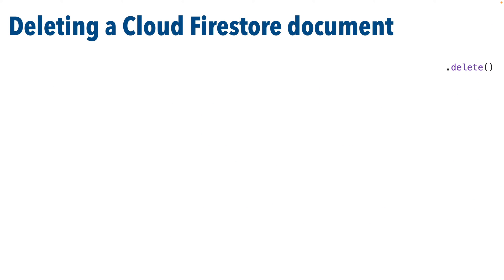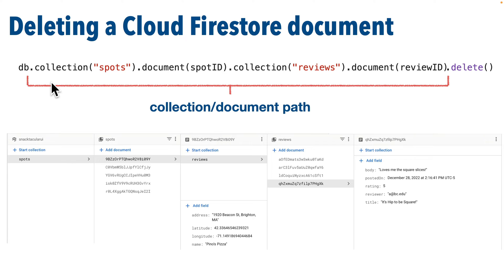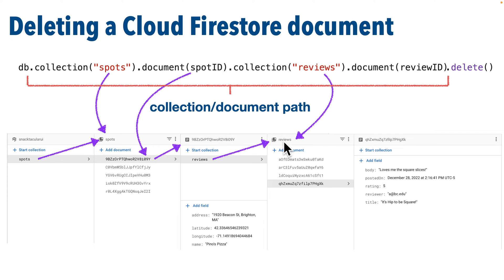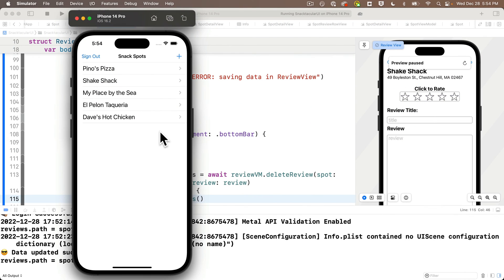Deleting a document in Cloud Firestore is super easy — we just use the delete method, specifying the path of the document we want to delete. In our example, we'll allow a user to delete any restaurant review they've posted. The collection-document path will look like this: after the database instance, we point to the spots collection, a specific spot document using the spot ID, then that spot document's reviews collection, pointing to a specific review document named with the review ID. That's what we'll delete.